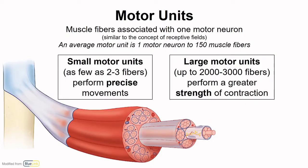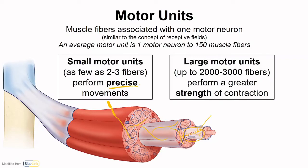Movement is not produced by the contraction of one fiber alone. Instead, motor units are recruited to produce specific types of movements. Motor units are all of the muscle fibers associated with one motor neuron. As that motor neuron courses through the muscle, it gives branches off to multiple muscle fibers — all of those fibers together form a motor unit. Motor units vary greatly in their size, allowing for extremely precise movements from small units or very forceful movements from larger units.